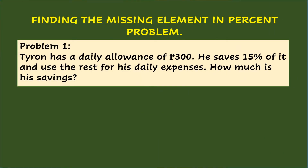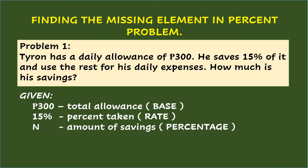Finding the missing element in a percent problem. Problem 1: Tyron has a daily allowance of 300 pesos. He saves 15% of it and uses the rest for his daily expenses. How much is his savings? To find the answer, identify the given numbers and elements. 300 pesos is the total allowance, so it is the base. 15%, which is the percent taken and has a percent sign, is the rate. The missing amount of savings, represented by variable N, is the percentage, since this amount is only part of the total allowance of 300 pesos.